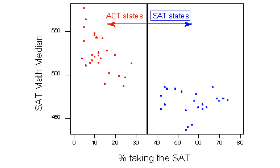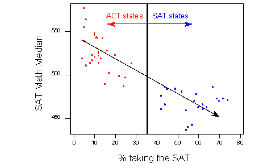On the other hand, in the SAT states on the right, larger percentages of students take the SAT. These students represent a much broader cross-section of the population, and therefore we see lower SAT math scores. To summarize, in this case, including the lurking variable — ACT state versus SAT state — helped us better understand the observed negative relationship in our data.